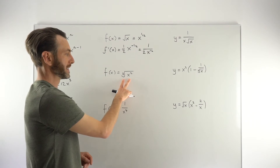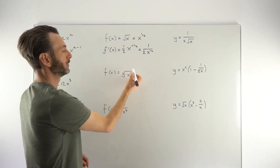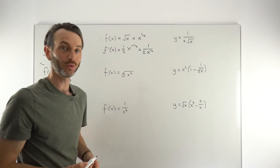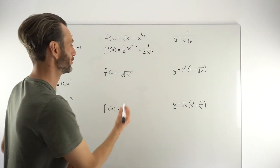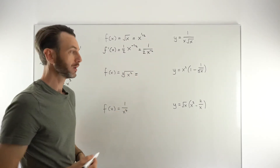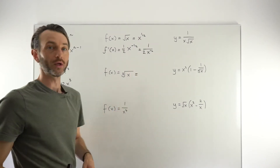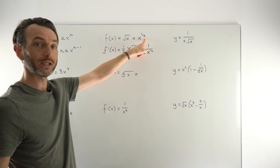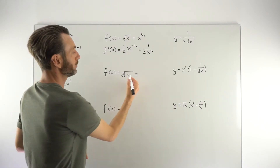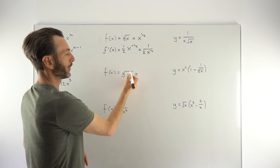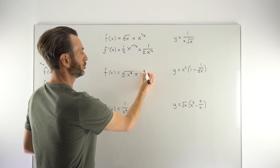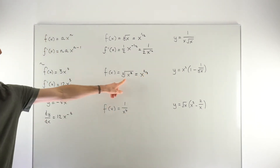Another common type: X raised to some power under some kind of root. Here we've got the cube root of X squared. A cube root is the same as a one-third power. If it was just X being cube-rooted, that would be X to the power of one-third. But we've already got an X squared, so that one-third power gets applied along with the squared, and it becomes X to the power of two-thirds.